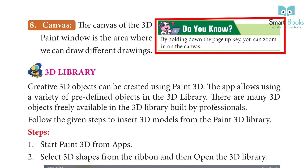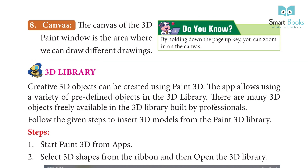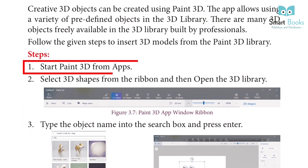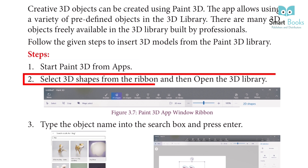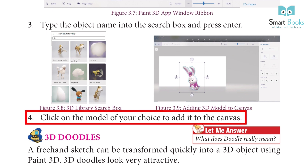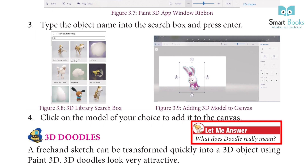Do you know? By holding down the Page Up key, you can zoom in on the canvas. 3D Library: Creative 3D objects can be created using Paint 3D. This app allows using a variety of predefined objects in the 3D Library. There are many 3D objects freely available in the 3D Library built by professionals. Follow the given steps to insert 3D models from the Paint 3D Library. Step 1: Start Paint 3D from apps. Step 2: Select 3D shapes from the ribbon and then open the 3D Library. Step 3: Type the object name into the search box and press Enter. Step 4: Click on the model of your choice to add it to the canvas.